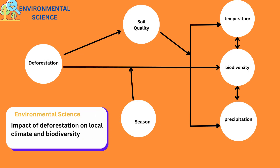In this study, we look at how deforestation affects local temperature, precipitation, and biodiversity. The independent variable is deforestation, which has a direct impact on local temperature, precipitation, and biodiversity. Soil quality operates as a mediator, connecting deforestation to the dependent variables. We also evaluate the season's moderating effect on these relationships. The conceptual framework demonstrates how deforestation, soil quality, and season interact to affect local temperature, precipitation, and biodiversity.